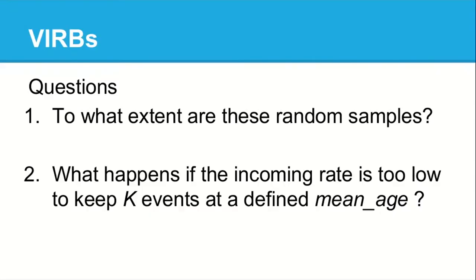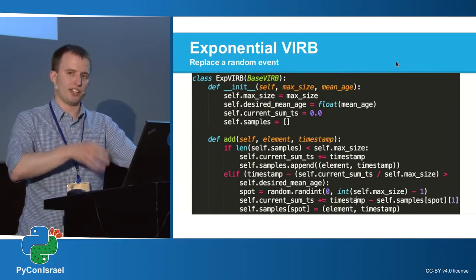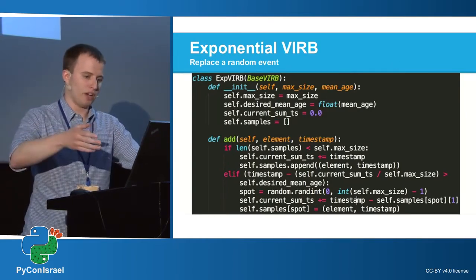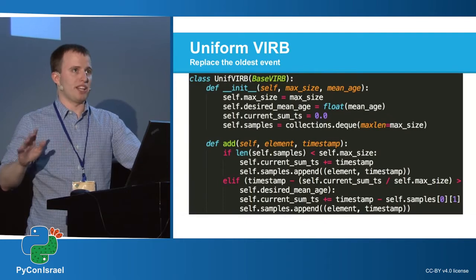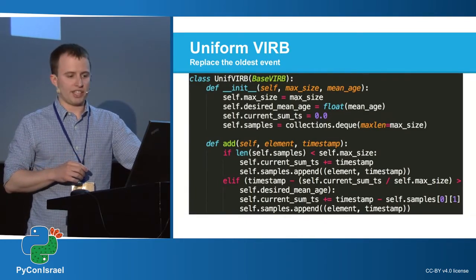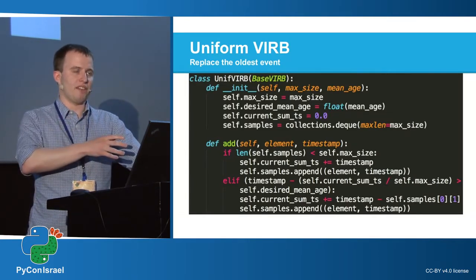Two quick questions before we show how the algorithms did in simulation. First, to what extent are these random samples? In classic reservoir sampling, there's randomness in whether you add a new object and in which event the object replaces. For the exponential VERB, there's no randomness in whether you add a new object given the current state, but there's randomness in what event you replace. The uniform VERB, however, given a data stream, will be deterministic. If the incoming rate is constant, the uniform VERB just reduces to picking every nth event and putting it into the sampler.